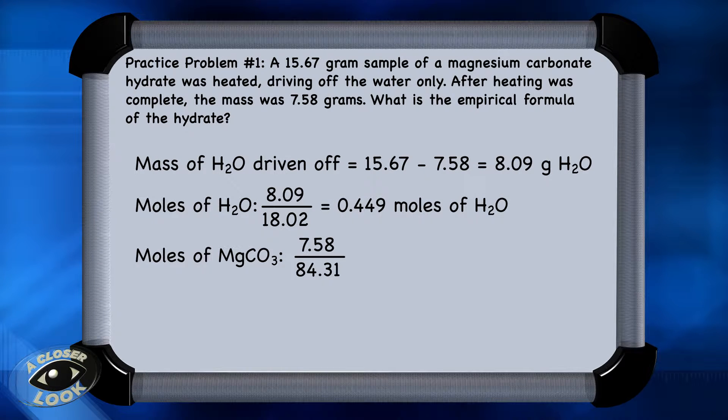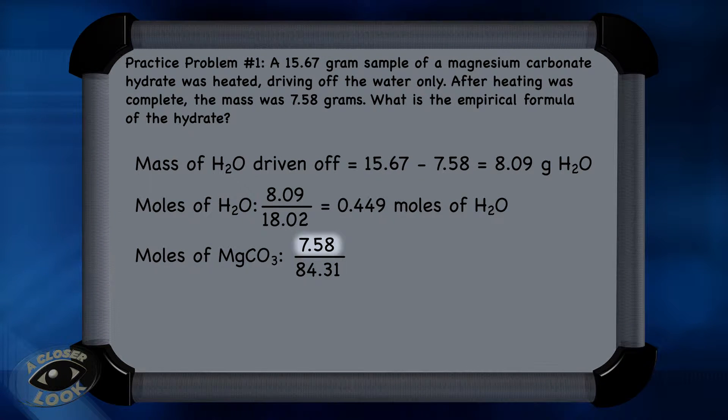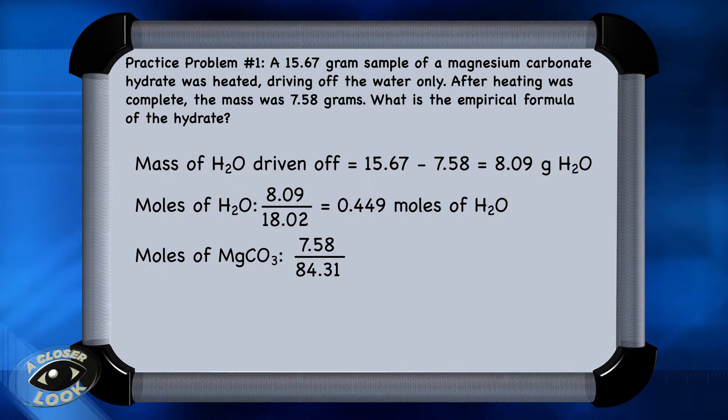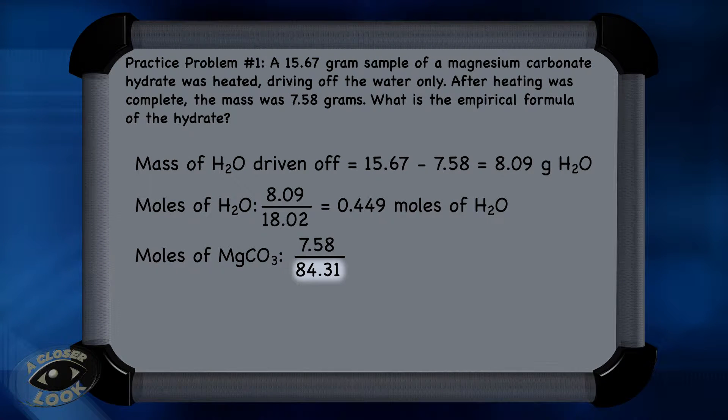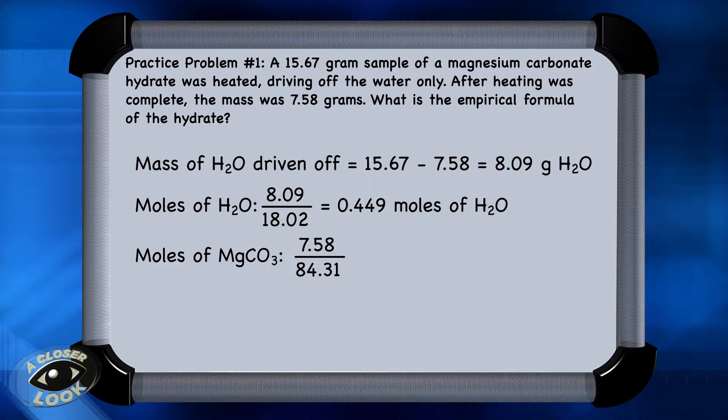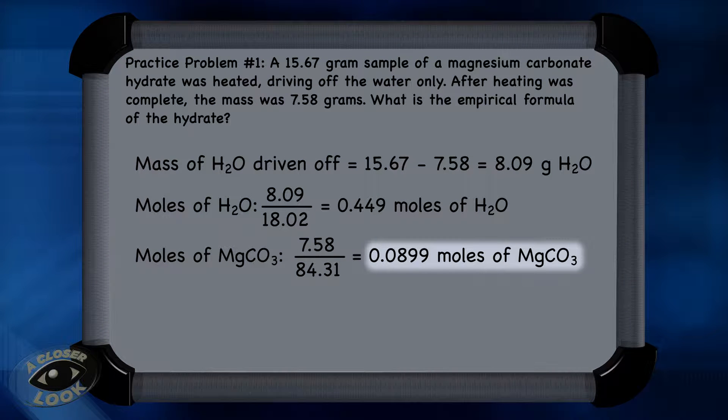Now, take the mass of the anhydrous magnesium carbonate, 7.58 grams, and convert that to moles using the molar mass of magnesium carbonate, which is 84.31 grams. So, 7.58 grams of magnesium carbonate divided by 84.31 is 0.0899 moles of magnesium carbonate.